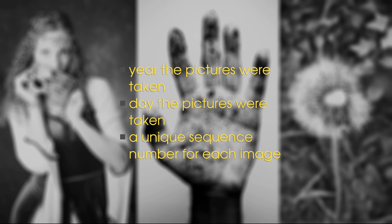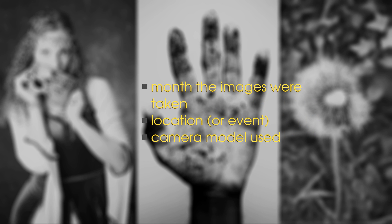File names for your digital images should include some basic information: the year the pictures were taken, the day the pictures were taken, and a unique sequence number for each image in the group. In addition, you can include other information to make your files more identifiable, such as the month the images were taken, location, and camera used.